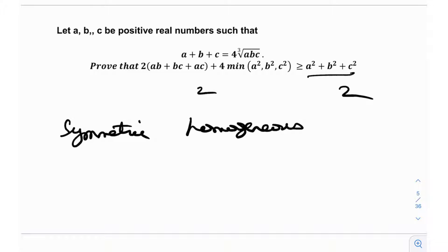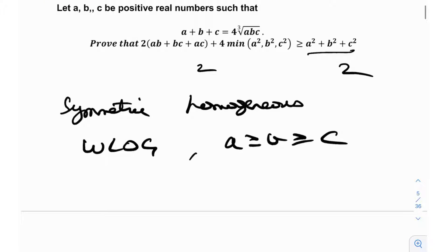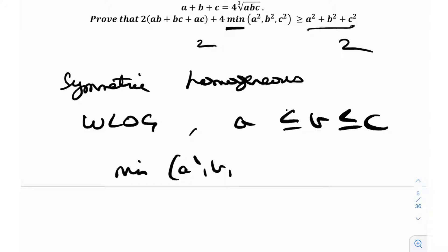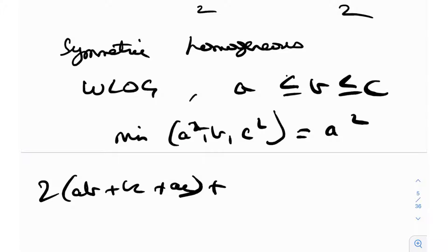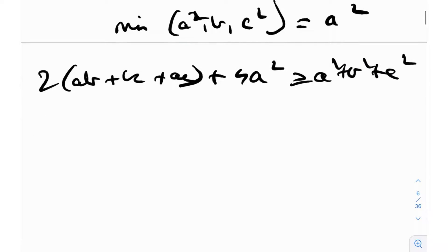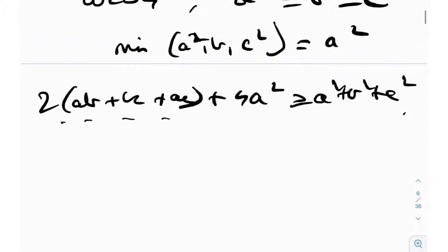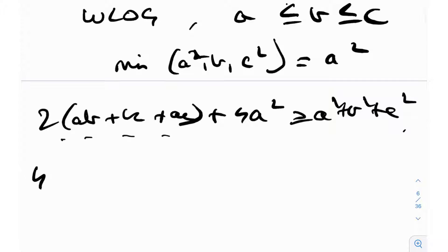Whenever we have a symmetric homogeneous inequality it's typically easier to solve. Without loss of generality, take a ≤ b ≤ c, so the minimum of a², b², c² is just a². We then need to prove: 2(ab + bc + ac) + 4a² ≥ a² + b² + c². Adding 2(ab + bc + ac) to both sides gives a perfect square on the right, and since a + b + c is given, that becomes 16·∛(a²b²c²).